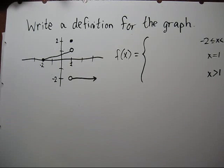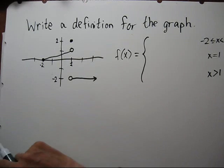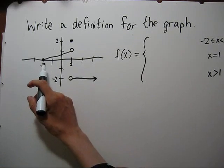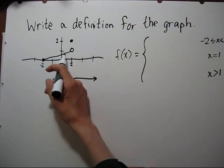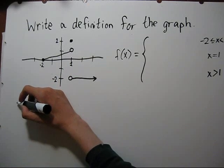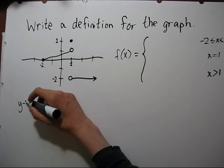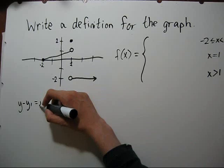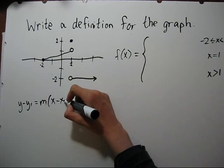So now we need formulas for all of these. Let's take negative 2 to 1. It's a line. Let's use the point slope form. That's y minus y1 equals m times x minus x1.